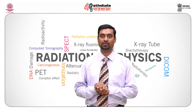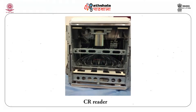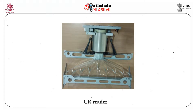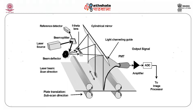The IP plate containing the latent image is fed into a CR reader. Inside the CR reader is a helium-neon laser which gives red light. This photograph shows the internal components of a CR reader including a laser assembly and optic coupling. The CR reader has a laser source and a beam splitter — one part of the beam goes to a reference detector and the other to a beam deflector. From the beam deflector, the beam is deflected to an f-theta lens, then to a cylindrical mirror, channeled through a light guide, and absorbed by a photomultiplier tube. From the photomultiplier tube it goes to the amplifier and then to an analog-to-digital converter for processing.